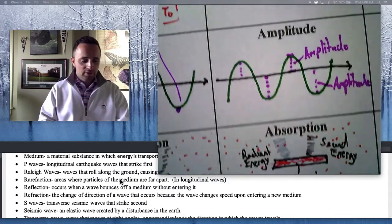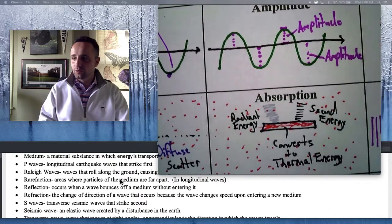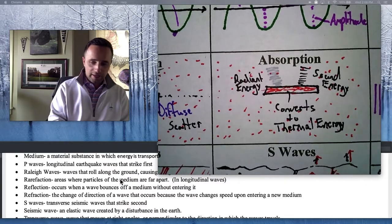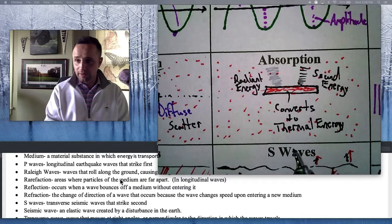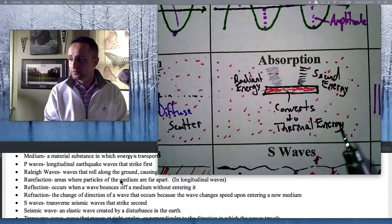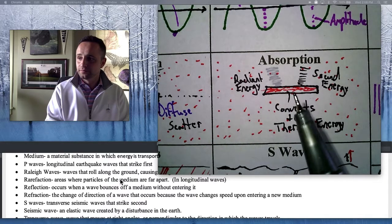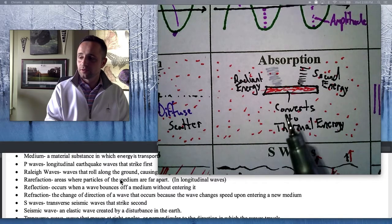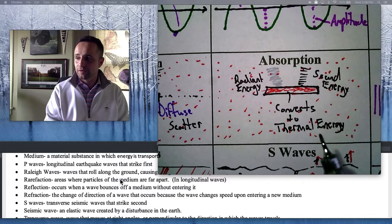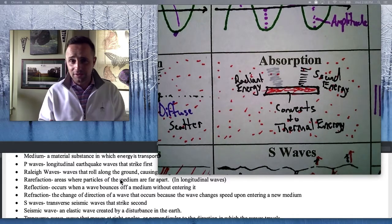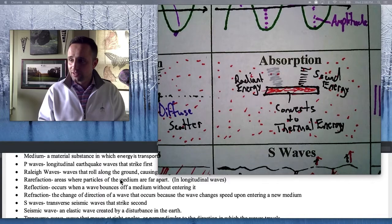All right. Absorption. You see, waves can be absorbed. And that's including electromagnetic as well as longitudinal. So, you have radiant energy and sound energy. Both of them could hit a new medium. And that new medium converts it into a different type of energy called thermal energy. So, it converts it to heat. So, that's what absorption does.